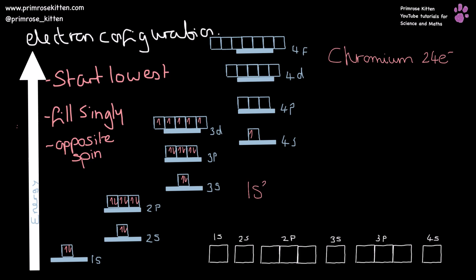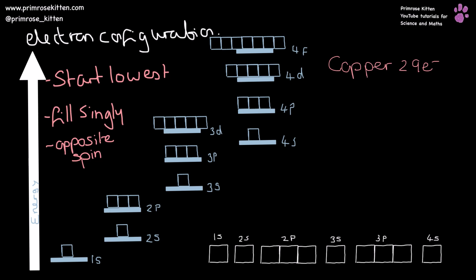So the reason this happens is because it's a more stable configuration. We can write chromium's electron configuration as: 1s² 2s² 2p⁶ 3s² 3p⁶ 3d⁵ 4s¹. Now copper has 29 electrons. Filling from the bottom: 1 through 18 — then moving to 4s because it has a lower energy level, giving us 19, and then leaving that half-filled while continuing: 20, 21, 22...